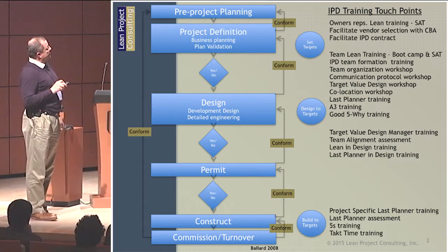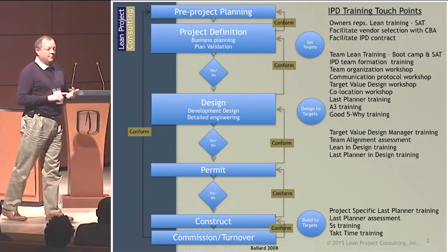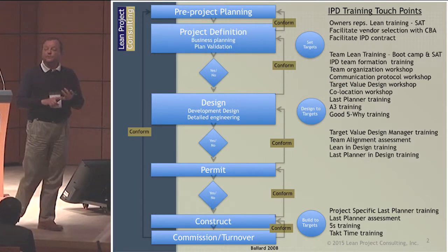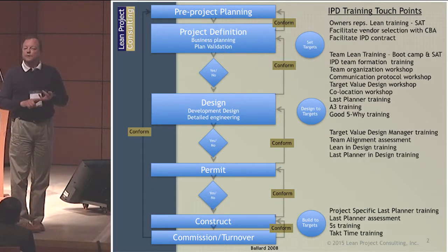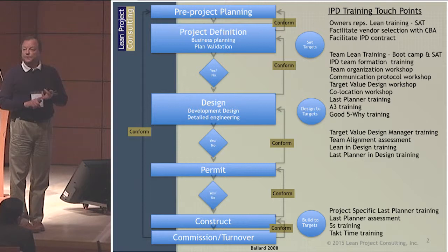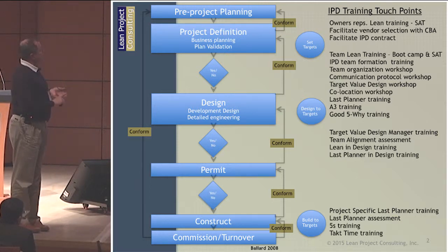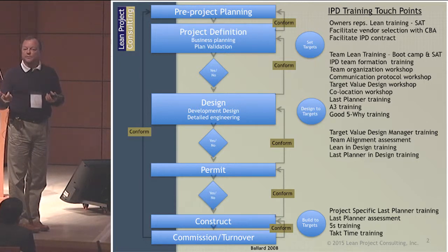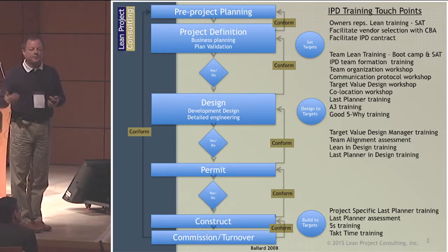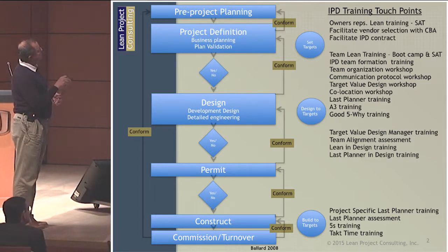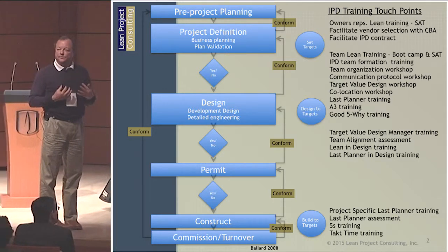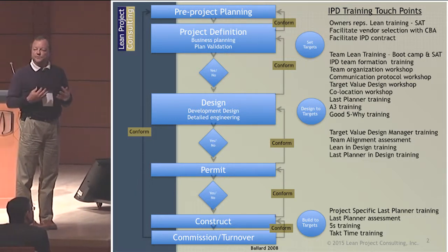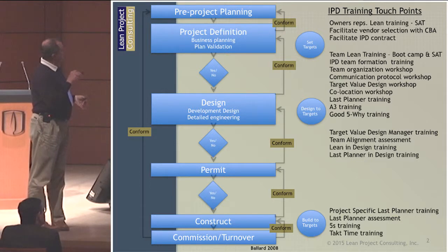The owner decides that if we build this project, that does these things, for this cost, it makes good business sense. The team validates that information and answers the question: can we build the project for this price, that does these things, with this certain quality? The answer is either yes, no, or yes if — yes if certain innovation is true, yes if the market rate for copper doesn't go up. That information is then conformed back to the boards of directors and corporate managers at a go/no-go gate.